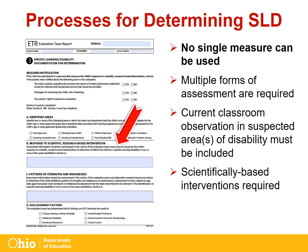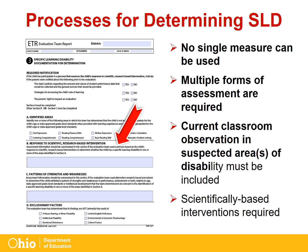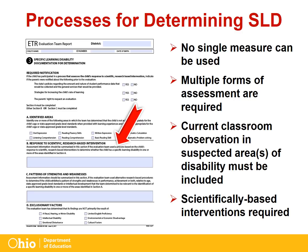No single measure can be used as the sole criterion for determining eligibility. Multiple forms of assessment that are technically sound must be used. An observation must be included as part of the process for determining if the child has a specific learning disability. Interventions that are used must be scientifically based, provided at appropriate levels of intensity, frequency, duration, and integrity, and relative to the child's identified needs.